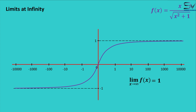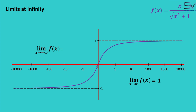Next, we see what will be the limit of the function when x approaches negative infinity. Again, we have to focus on the black dot. As x takes on larger and larger negative values, the function is approaching minus 1. So the limit of this function is minus 1 at negative infinity.